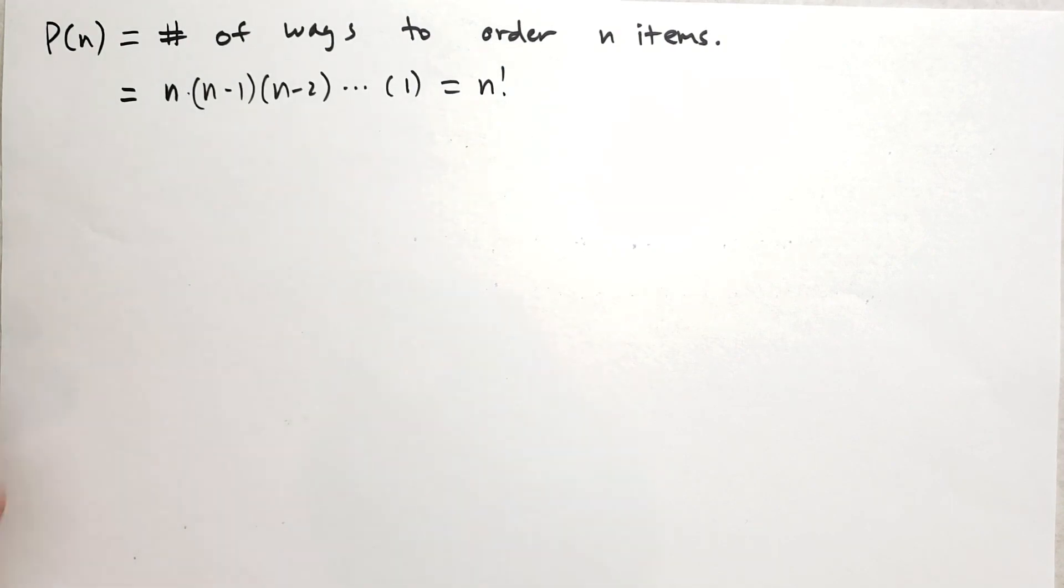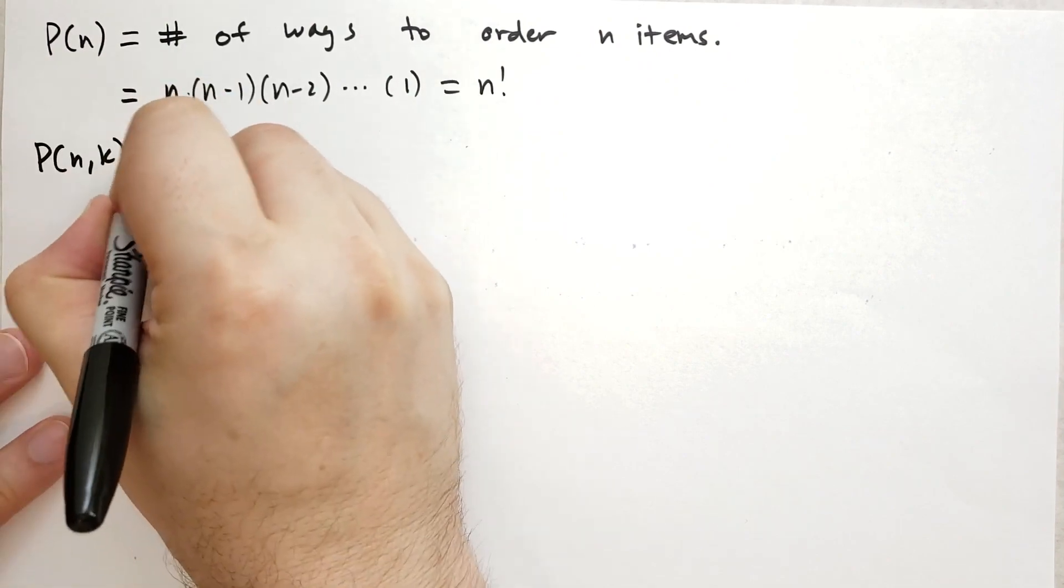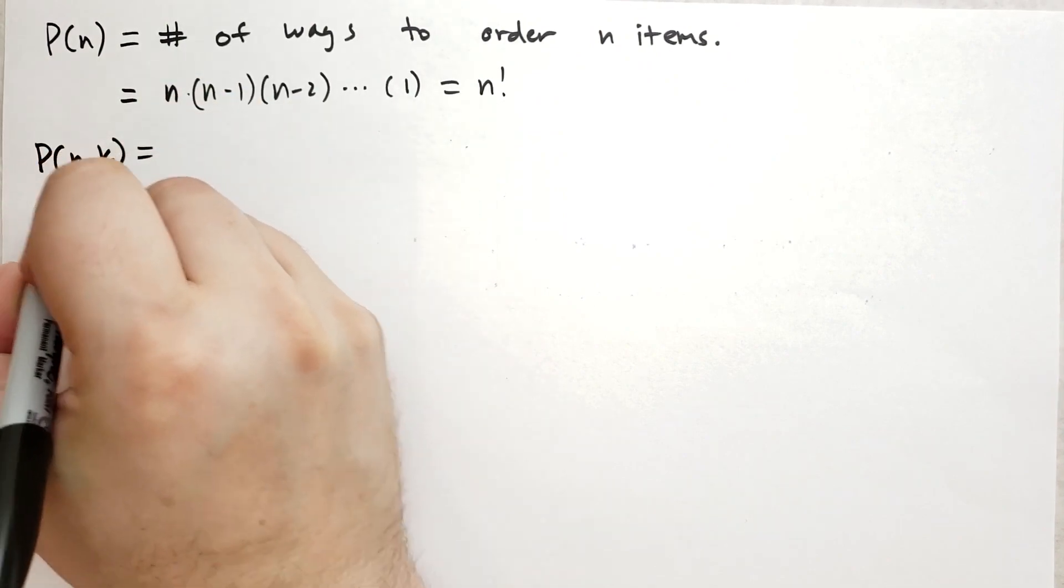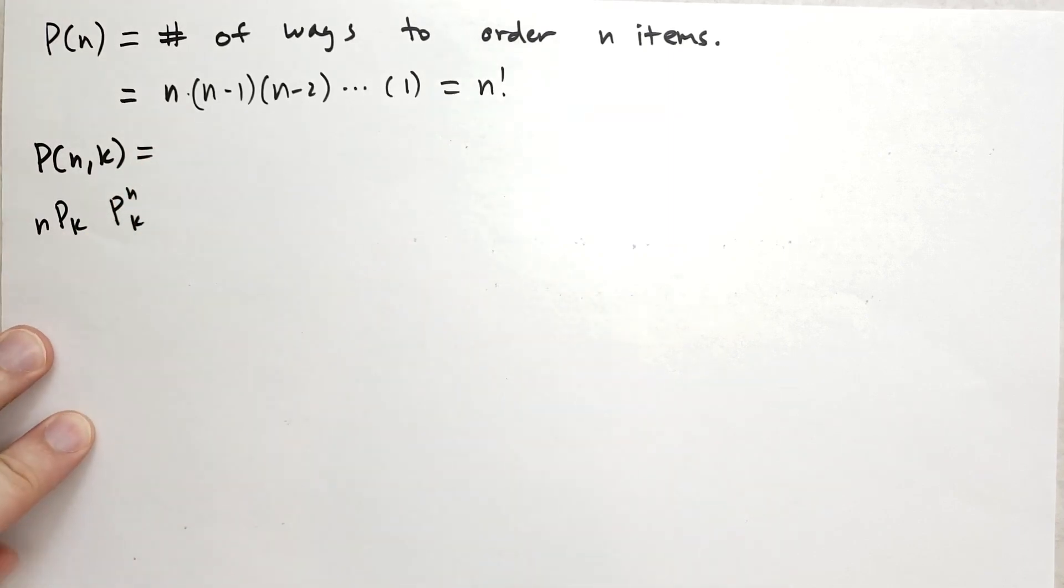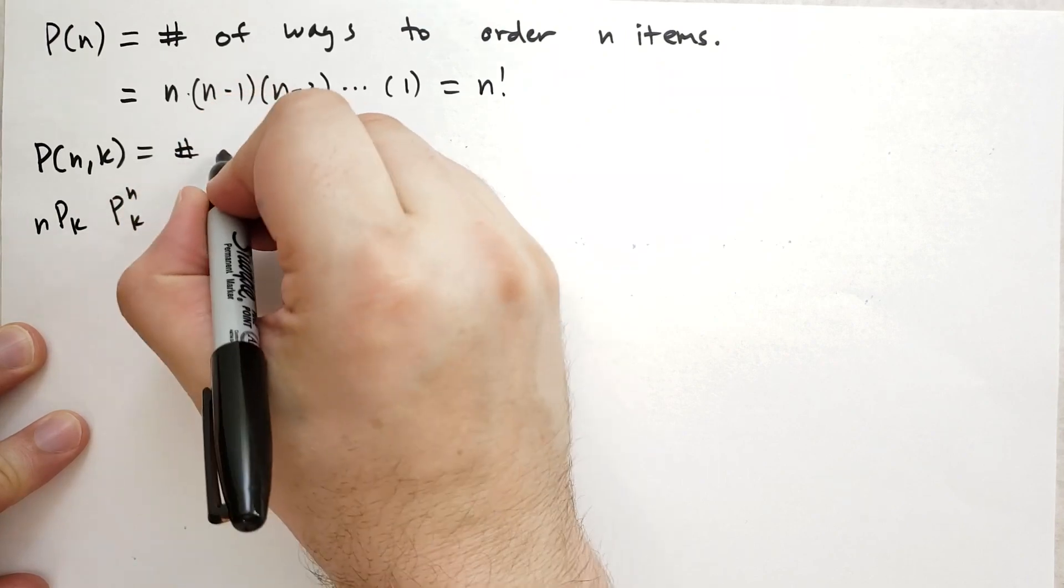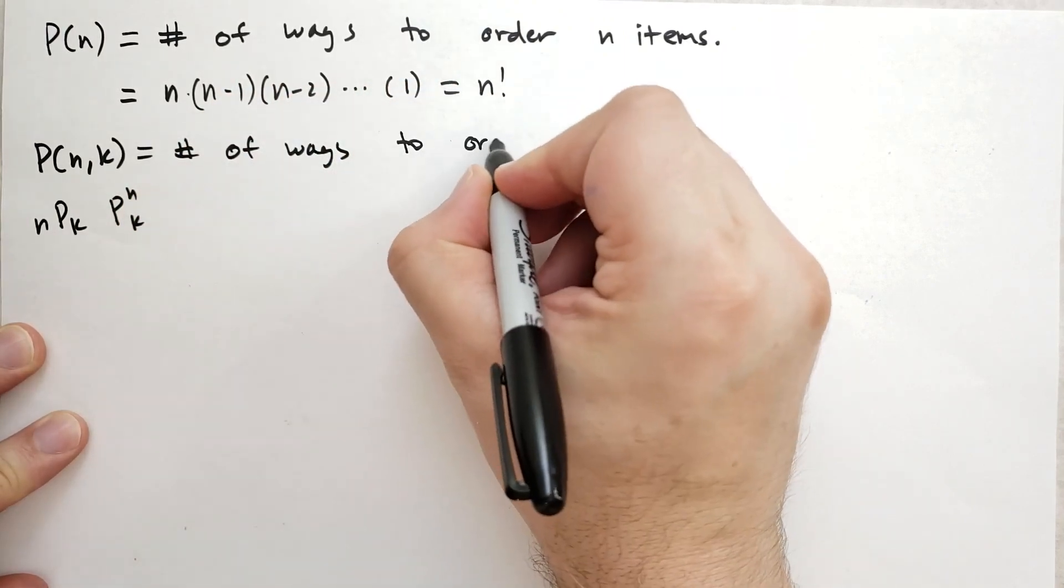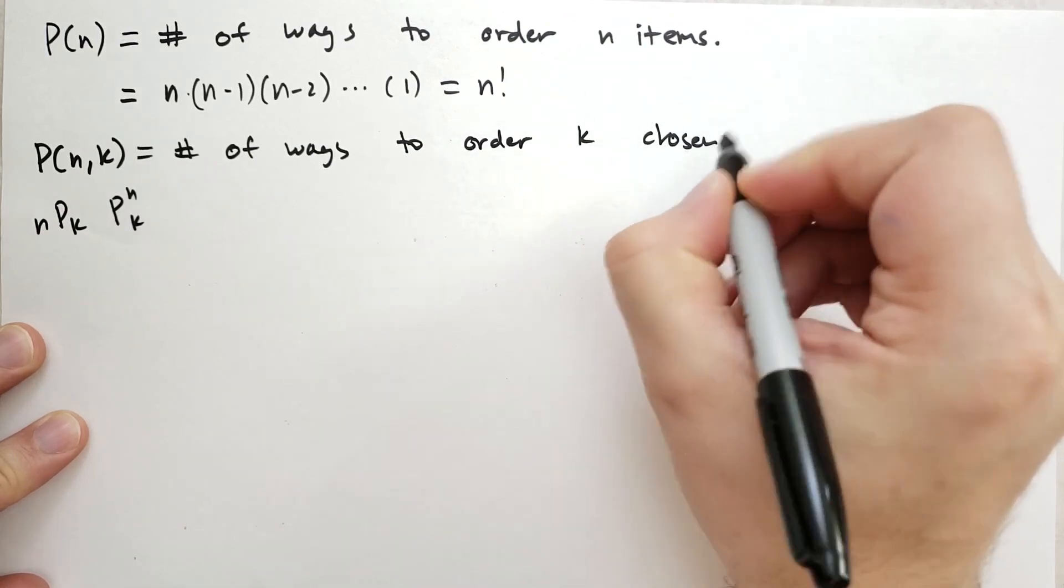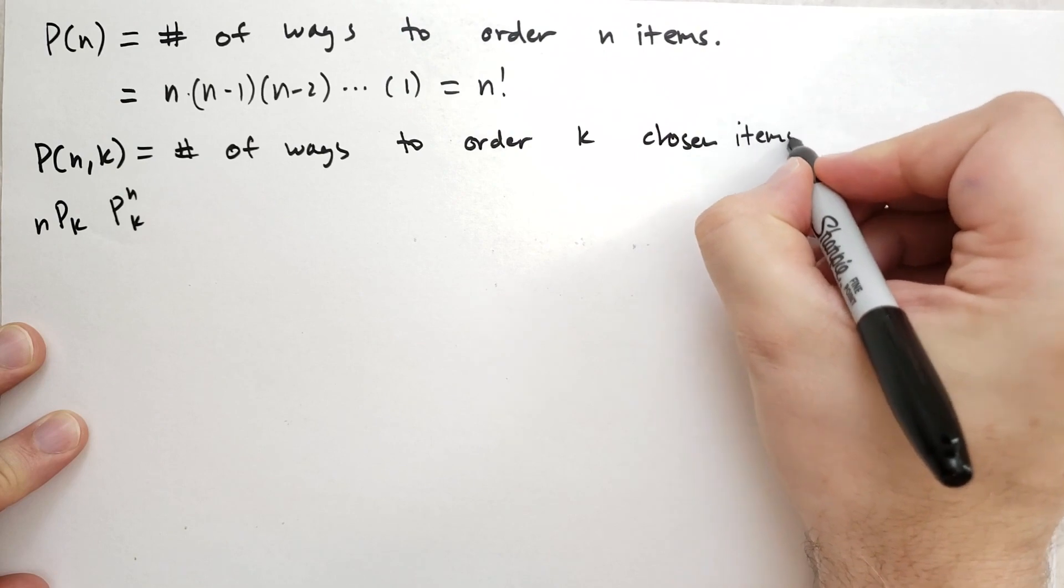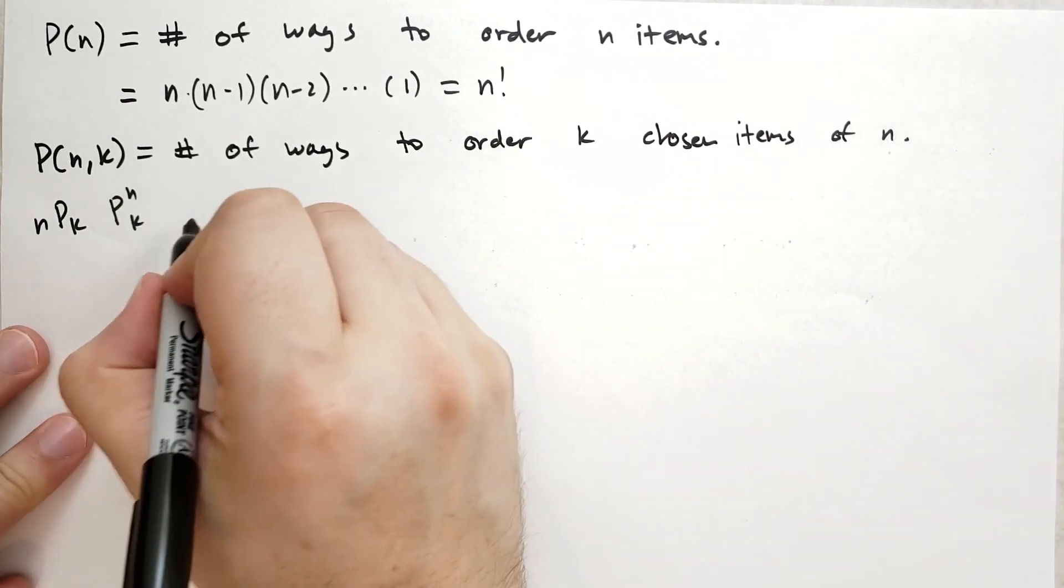Now the next concept I want to introduce is this other function. I'm going to call it P of N comma K. You might see this as N P K or P with the N on top with the K on the bottom, something like that. But let's look at it this way. Let's think of it as a function. So what this does is this counts the number of ways to order K chosen items of N.